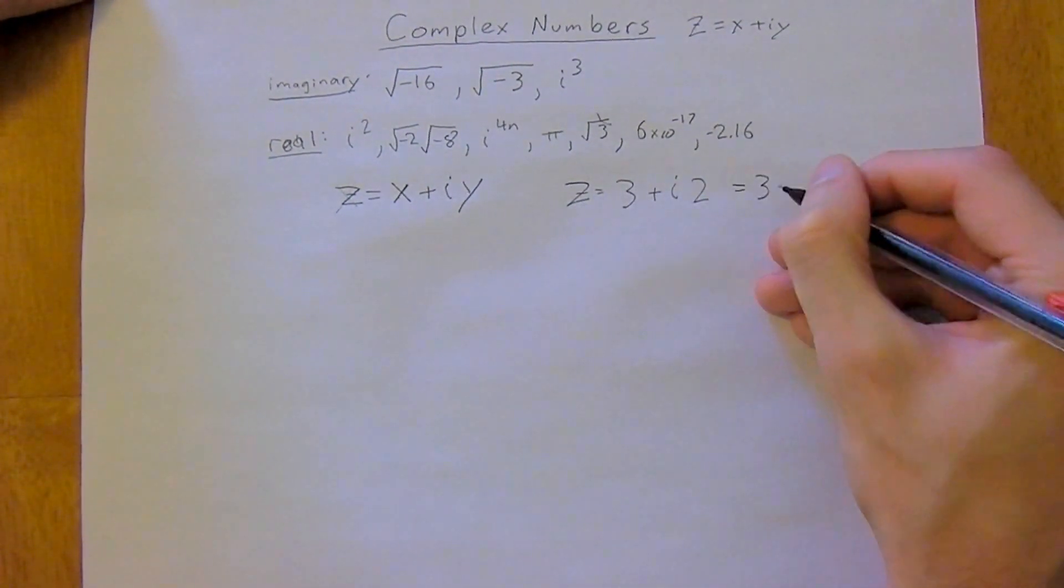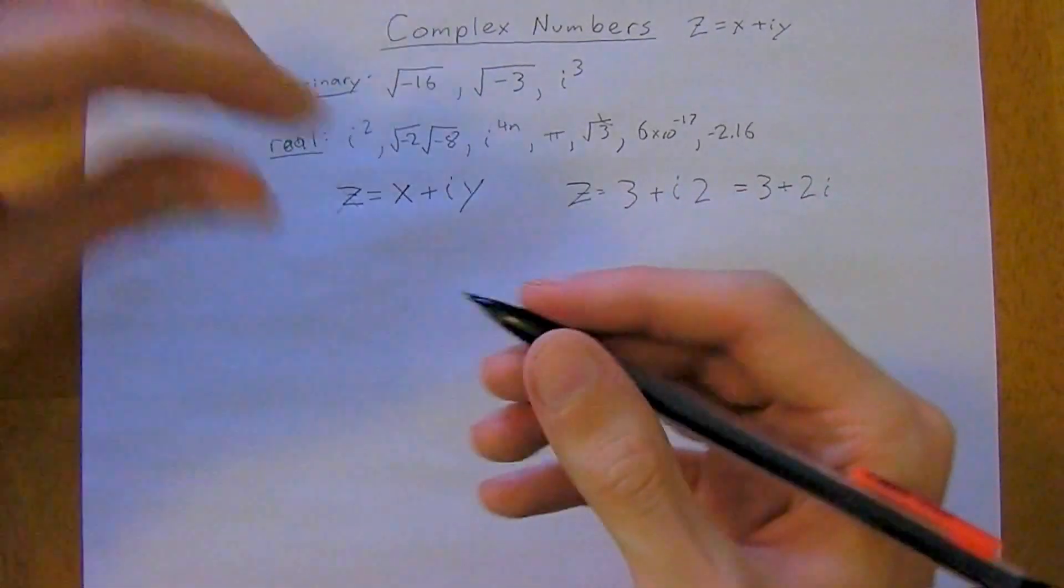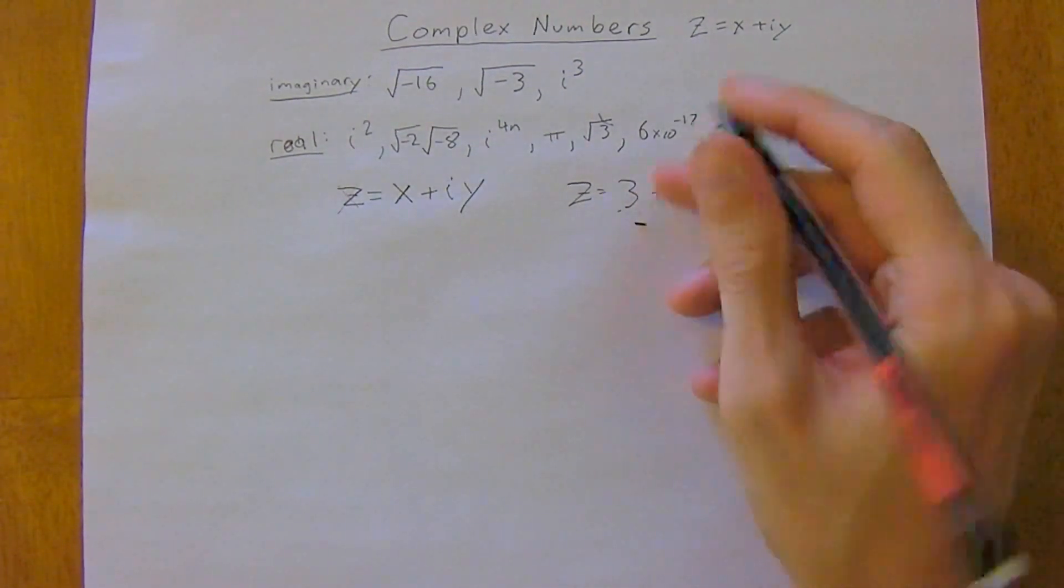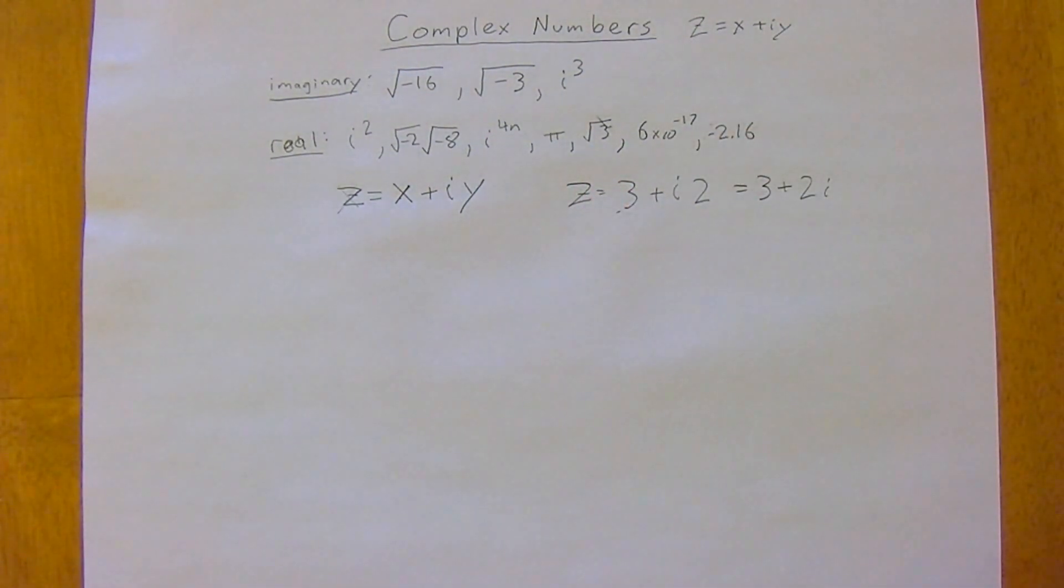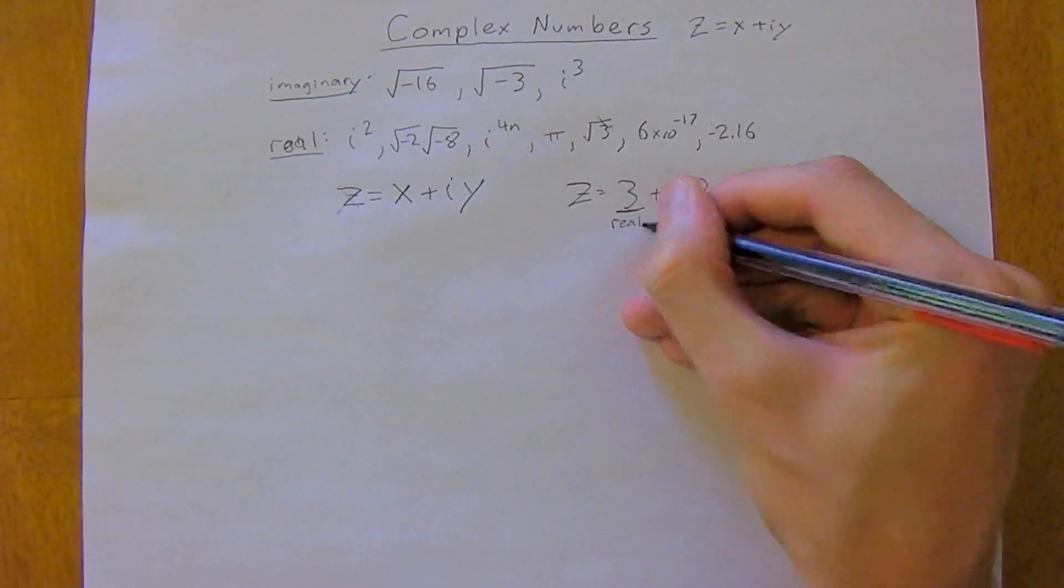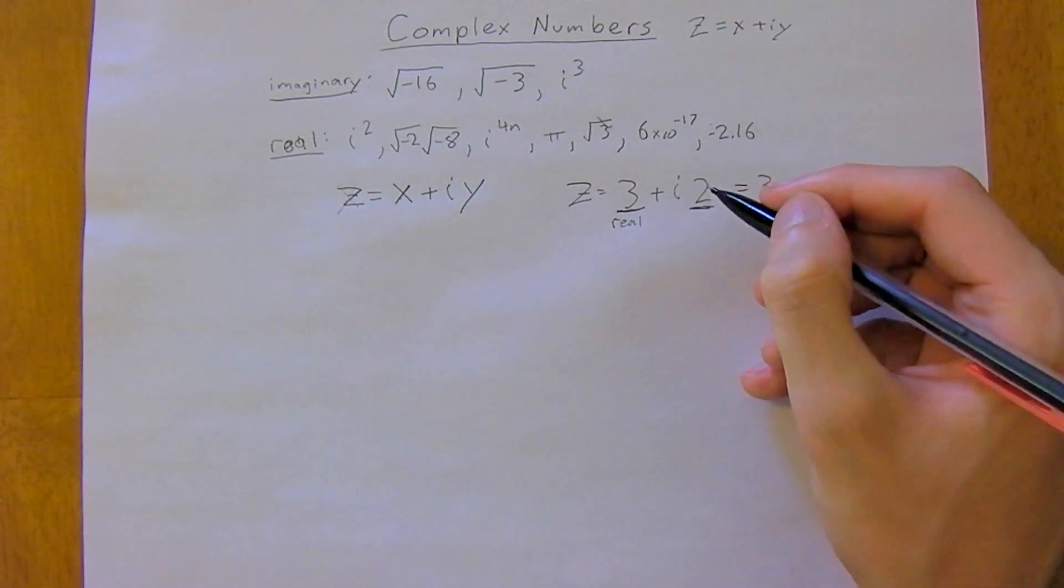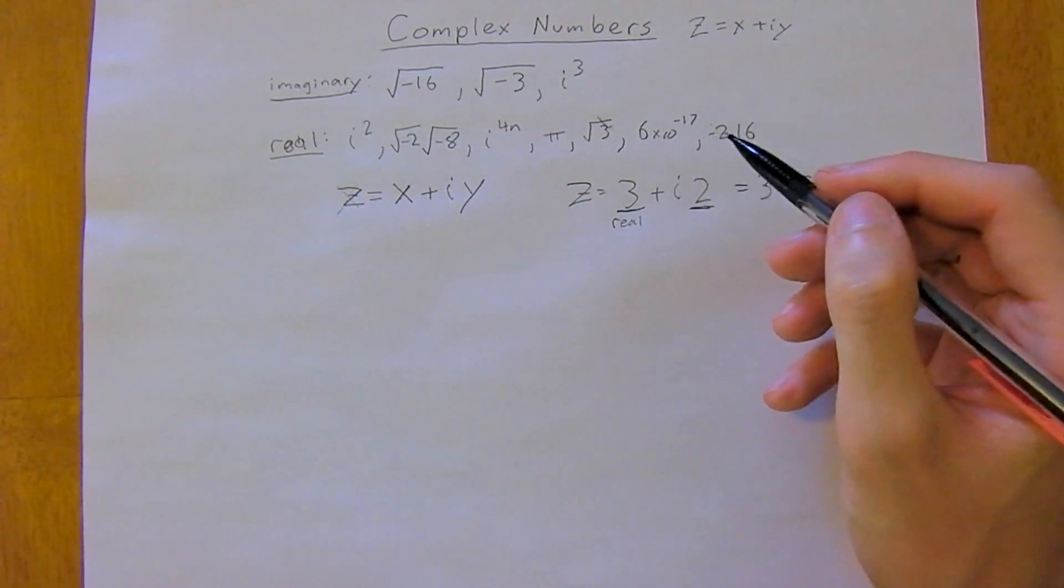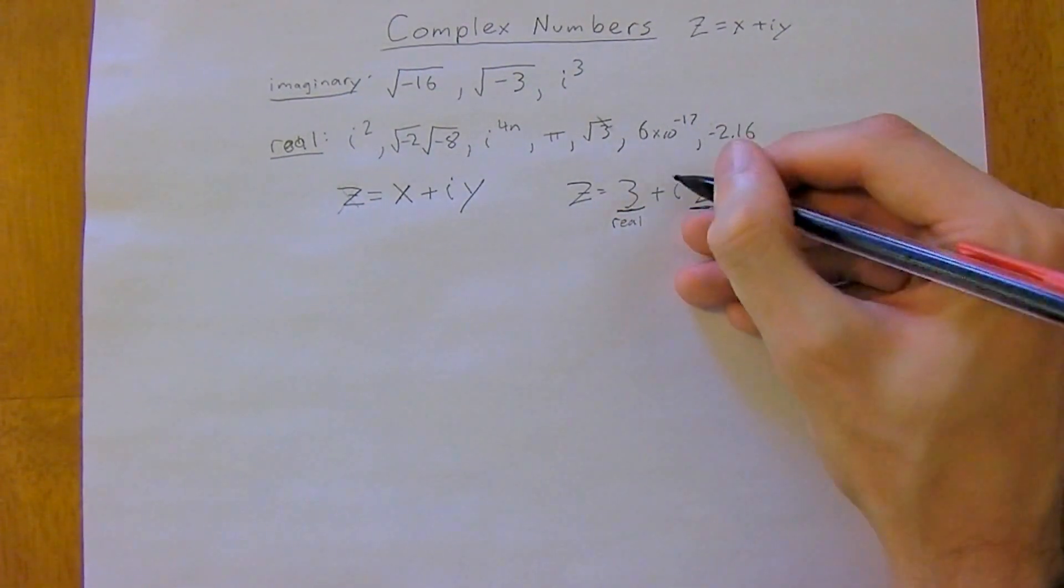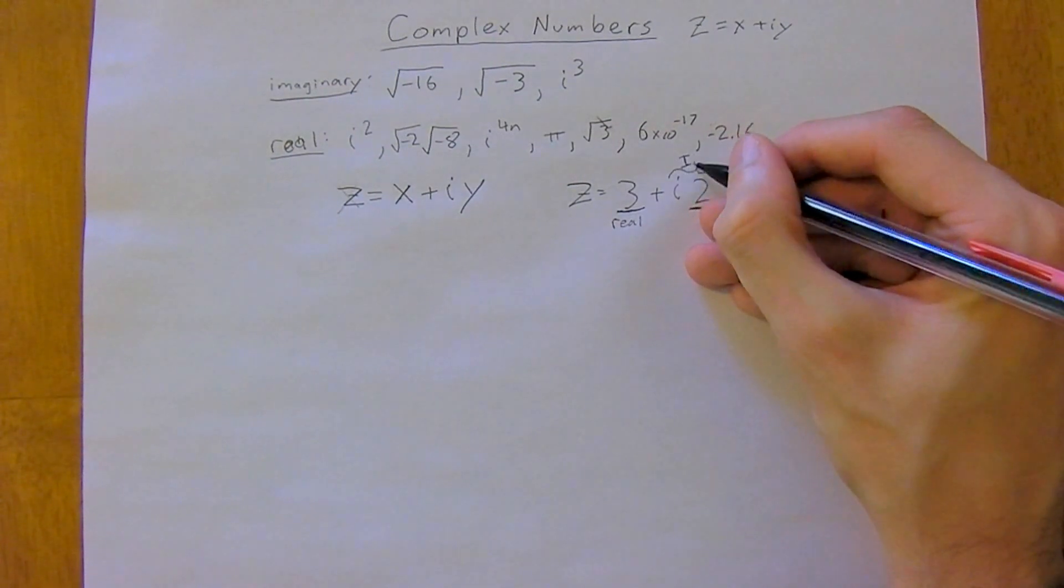And so in this we have our real number 3—our real number is 3. And this other part, so every complex number has two components: a real part and an imaginary part. So this part is the imaginary part.